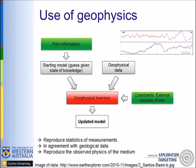For the use of geophysics, usually you have a source of prior information — for example, you can identify a fault — which you put into your starting model for geophysical inversion. You feed geophysical data into a geophysical inversion code, which produces an updated model accounting for this prior information and fitting the geophysical data as well as possible. You can also apply petrophysical constraints, saying the model should lie in certain regions of the crossplot as much as possible.